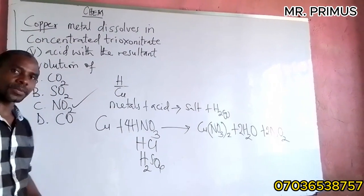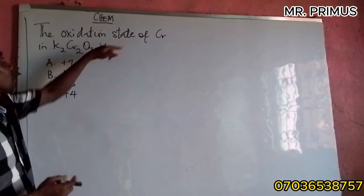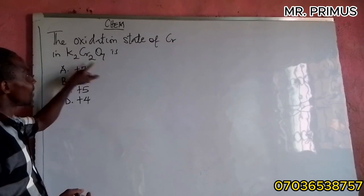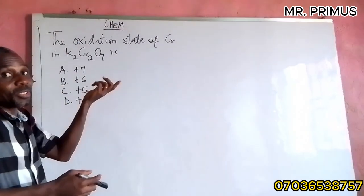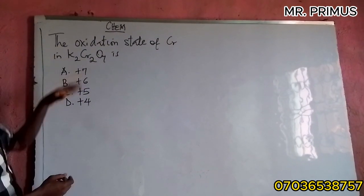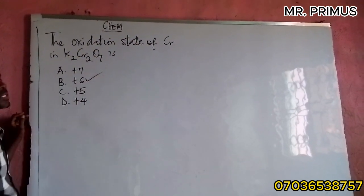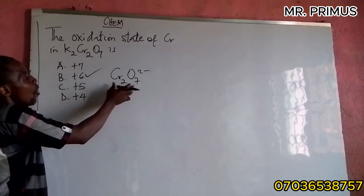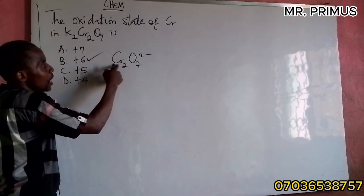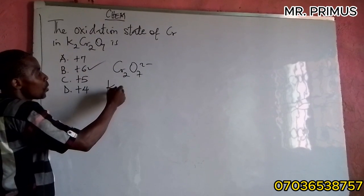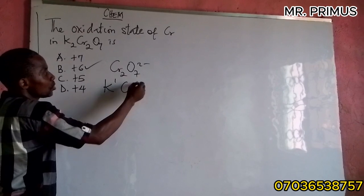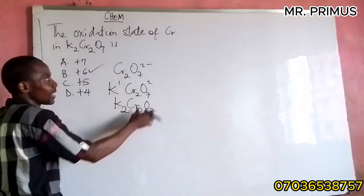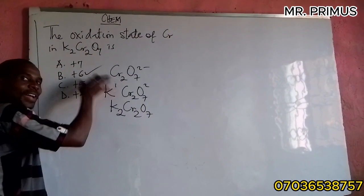By balancing the equation you have been able to get the product. Thank you very much. Let's look at another question. The oxidation state of chromium in potassium heptaoxodichromate(VI), K₂Cr₂O₇. The answer is 6. Now, how did we get 6?